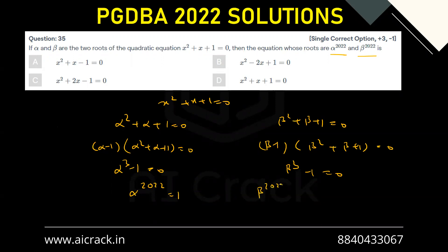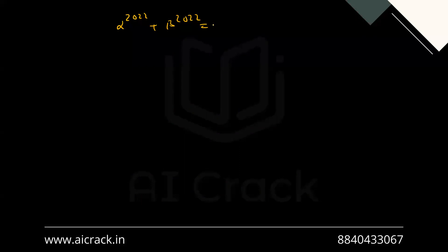Similarly, beta^2022 = 1. Now we want to find out the sum of the roots and product of roots. So basically, alpha^2022 + beta^2022 = 1 + 1 = 2.